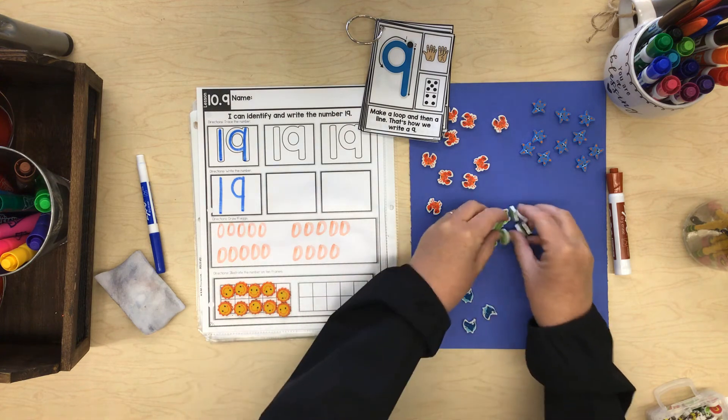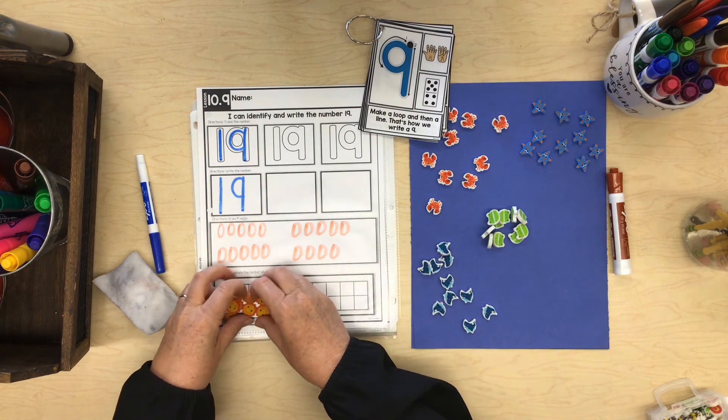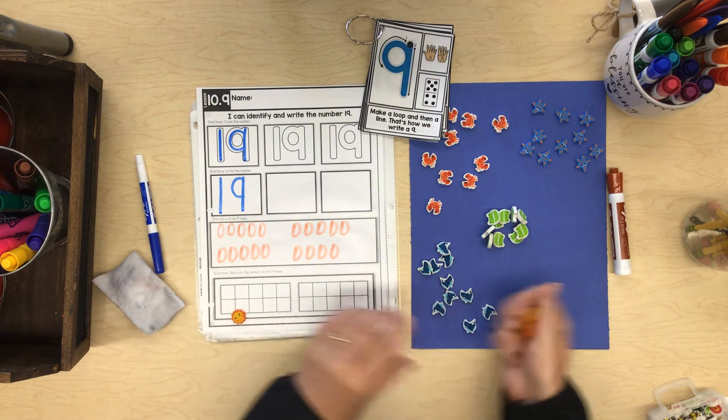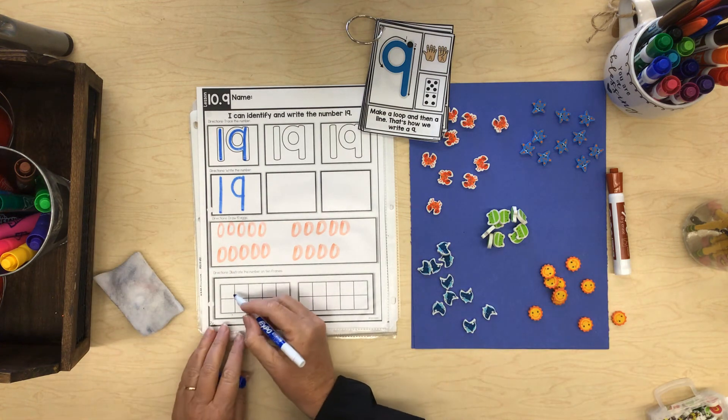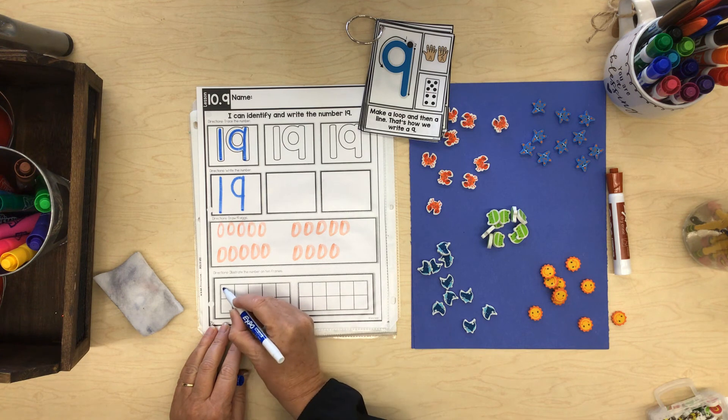Okay, now we'll switch it and we will draw our 19 X's. Let's fill up our 10 frame on this side. We're going to go across with our X's.